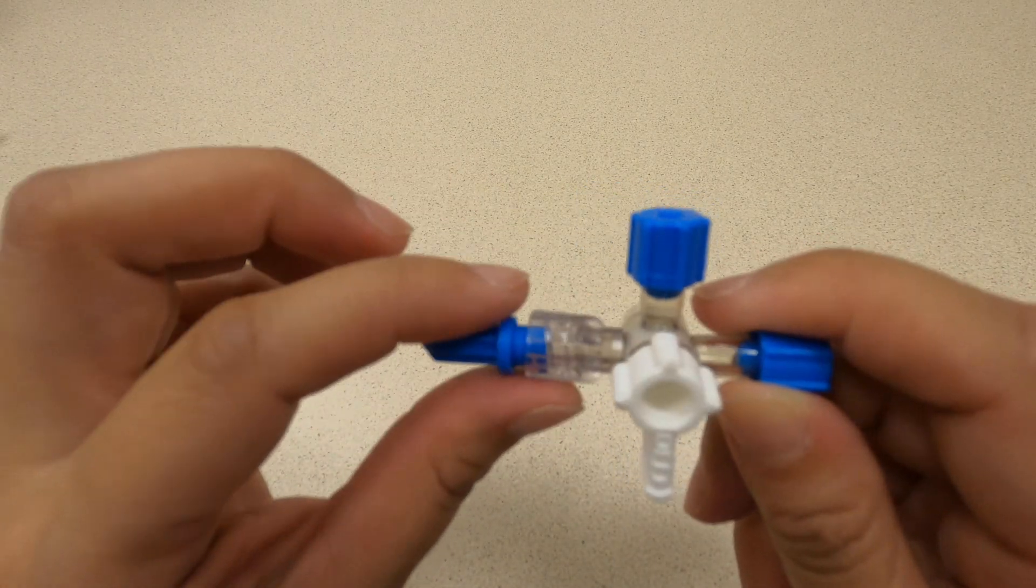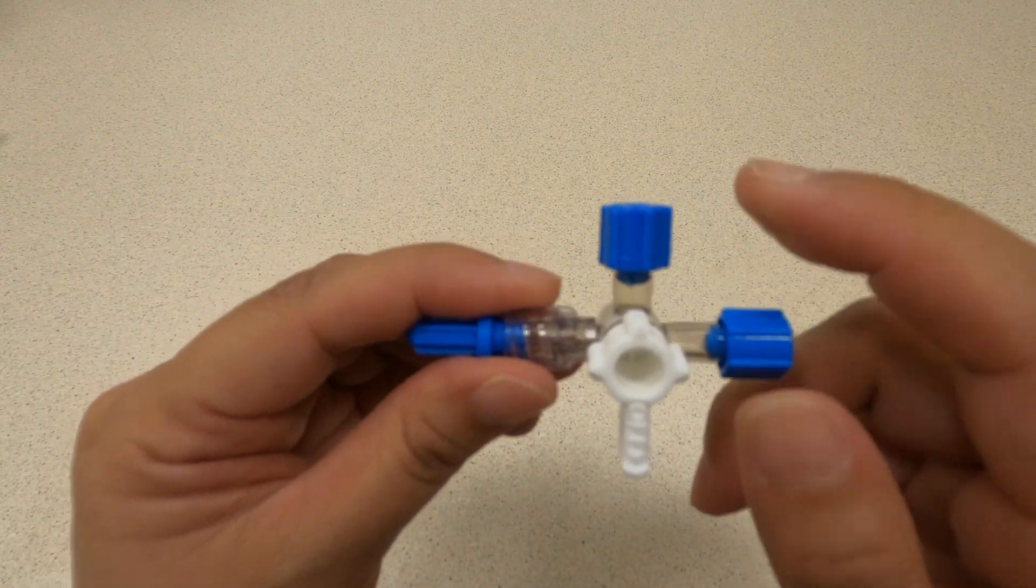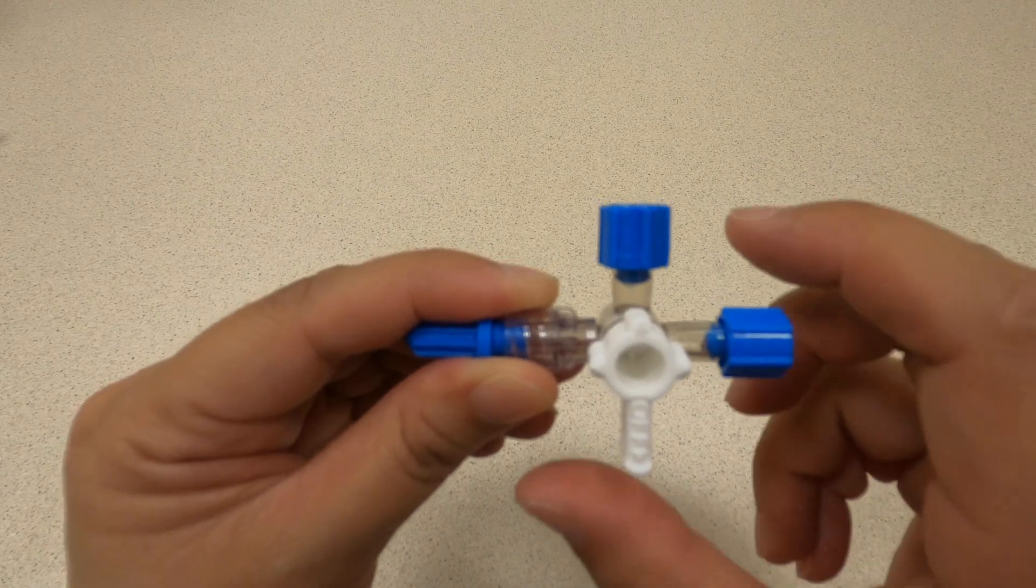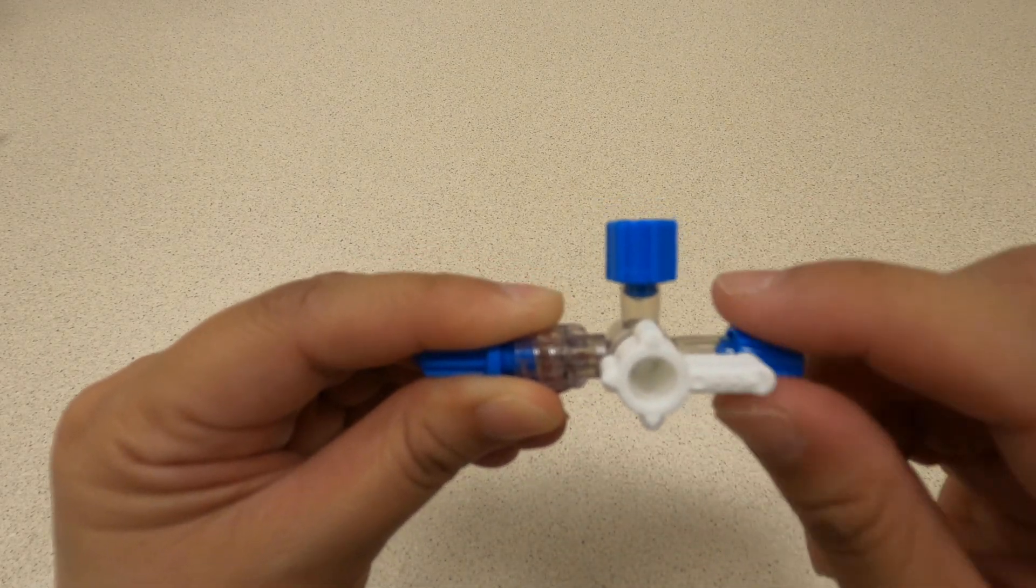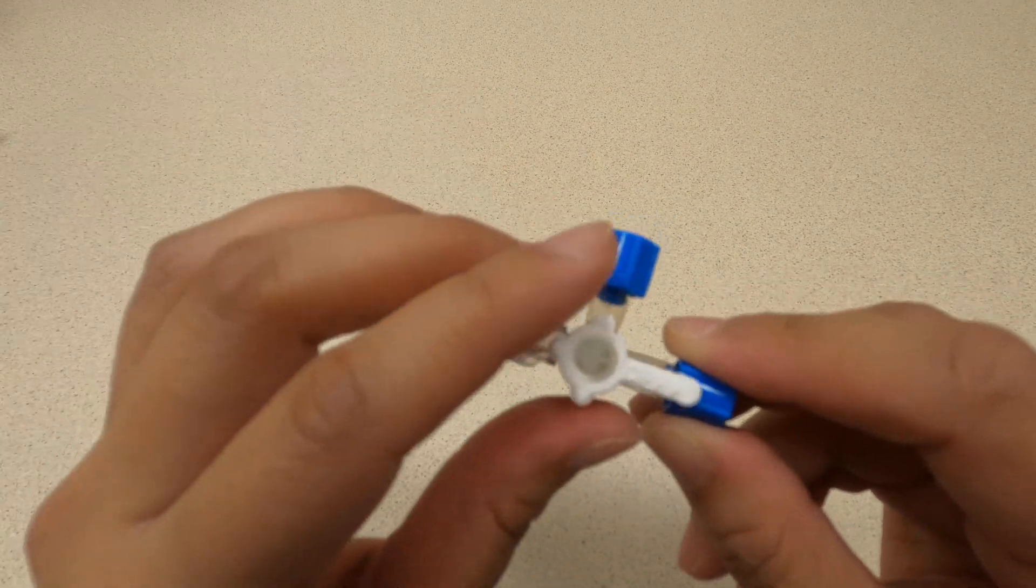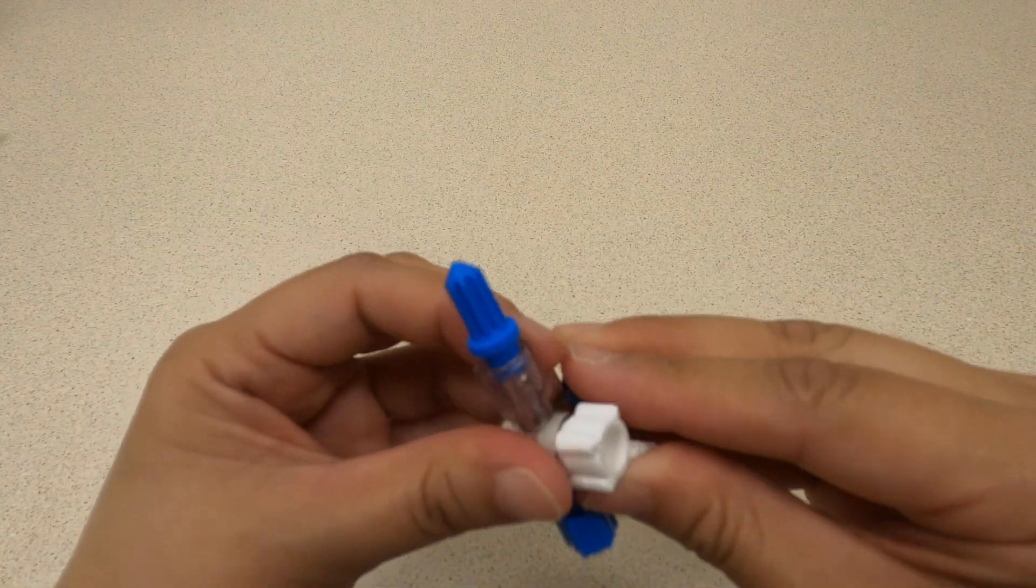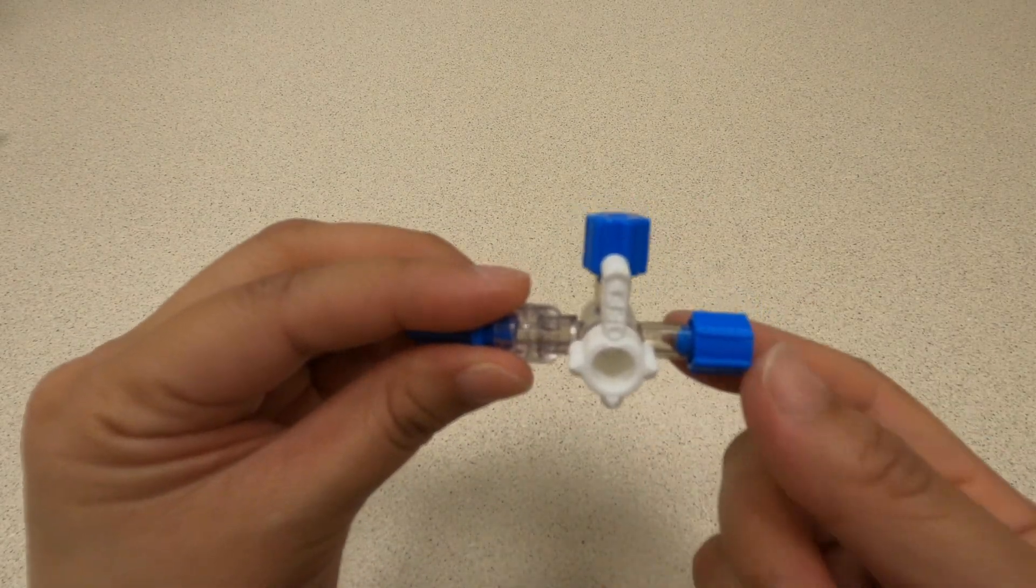This one that has the luer lock is the one that typically goes to the patient or is connected to the IV, and then your medication or IV fluids are connected to these two ports. As an example, if I turn off to this port, this means that this port is now off and only these two ports can communicate. Similarly if I turn it off this way, now these two ports are the only two ports that will communicate.